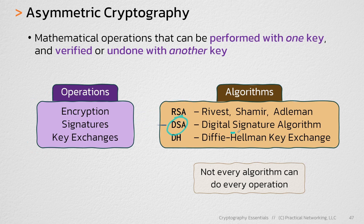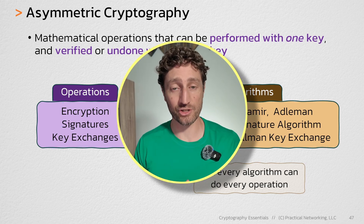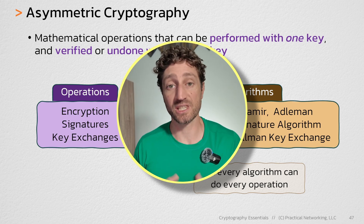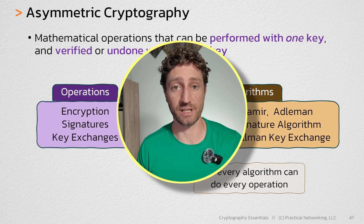DSA is a signature algorithm — it can only be used to do signatures. There is no such thing as DSA encryption or DSA key exchanges. And Diffie-Hellman, as you can guess, is a key exchange algorithm. It can only be used for the purpose of key exchanges — you cannot do encryption or signatures with Diffie-Hellman. So that wraps up our introduction to asymmetric cryptography. Over the next few lessons in this series, we'll be looking at the operations and the algorithms that provide them in more detail.